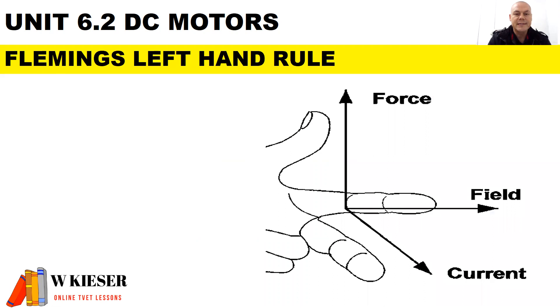We use Fleming's left hand rule for motors. The thumb points in the direction of force, the index finger in the direction of field, and the middle finger in the direction of current.